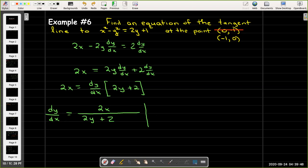Now we'll evaluate that when x equals negative 1 and y equals 0. And we will find then that that is going to equal negative 2 over 2 which equals negative 1. And so that is the slope of the tangent line.